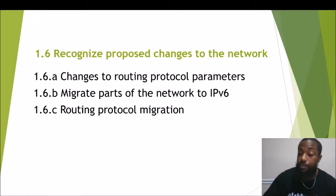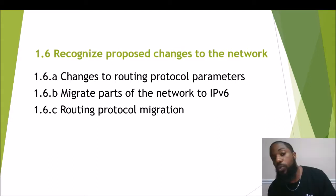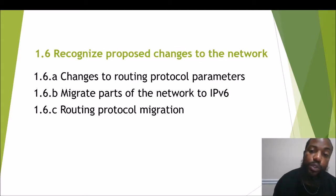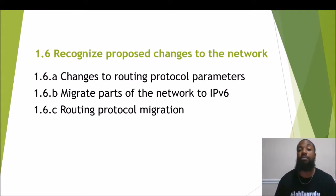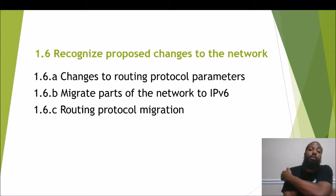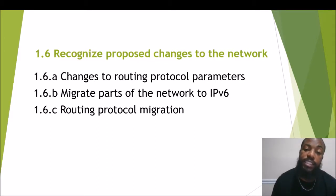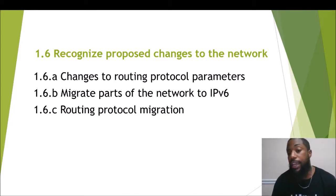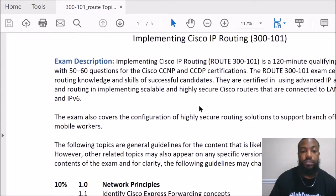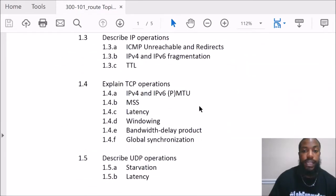What's up, it's your boy The Network, and today's topics — yes, I said topics, plural — are 1.6A through C: changes to routing protocol parameters, 1.6B migrate parts of the network to IPv6, and 1.6C routing protocol migration. These are all subsections under section 1.6 'Recognize Proposed Changes to the Network' for the CCNP ROUTE exam, exam code 300-101 version 2.0. Let's take a look at the exam blueprint.